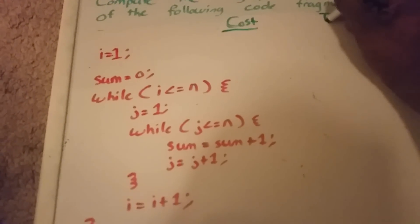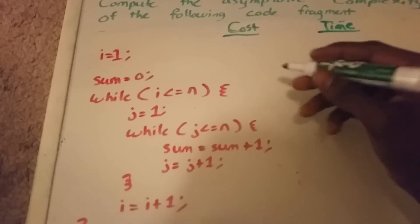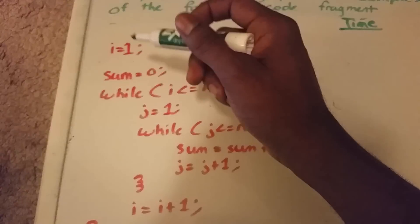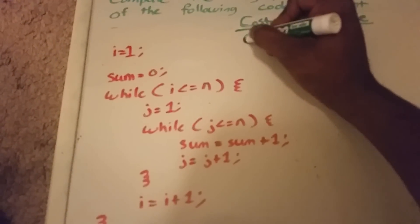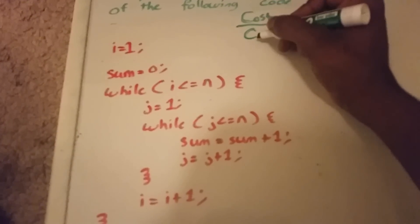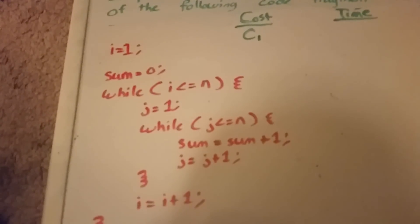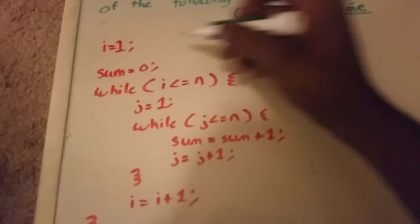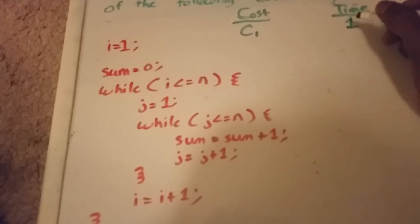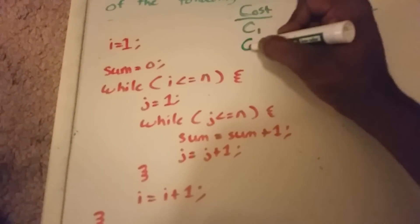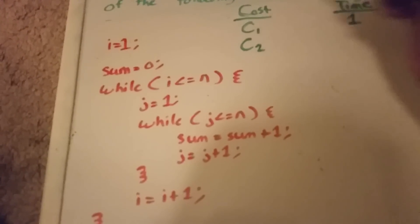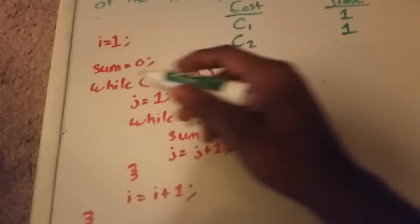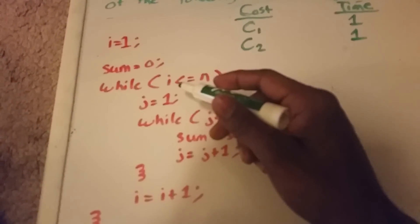and the amount of times that each of these statements are run. First we have i equals one — the cost may be some unit of time that we don't know, so we put C subscript 1 for a constant, and it's run one time. Same for sum equals zero: it has a cost C subscript 2 and it runs one time. Next we have a while loop while i is less than or equal to n.